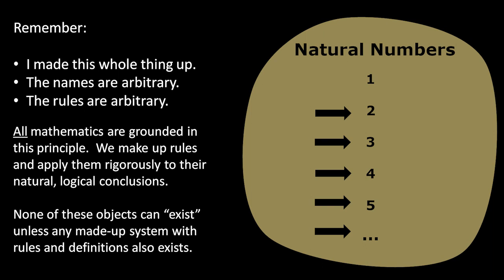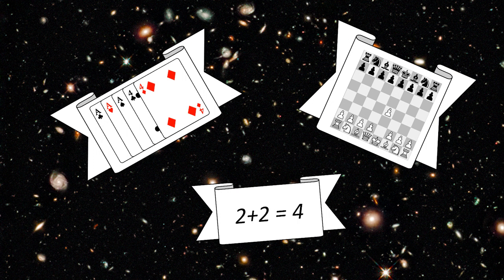Remember, I made this whole thing up out of nothing. I could have used different names and different rules, but I chose to use these. And honestly, this is all that mathematics is — it's just a bunch of rules and definitions applied rigorously to their natural, logical conclusions, and nothing more. So to reiterate the fundamental point: if numbers genuinely exist, then any bundle of rules and definitions that I make up must also exist. That's what we mean when we say there's no more truth to mathematics than there is to hopscotch, poker, and chess. When you follow the rules of chess, you're simply playing chess. And likewise, when you follow the rules of algebra, you are simply doing algebra. If you seriously want to argue that numbers exist, then you're also arguing that checkmates and full houses exist as well. There's just no philosophical difference between these systems. Of course we made them up and they don't really exist without us.